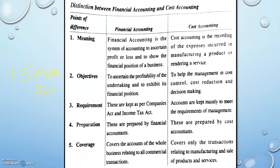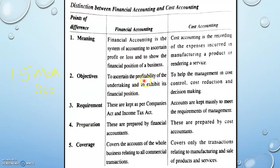If you are doing financial accounting, the objective is assigning profitability and determining financial position through the balance sheet. For cost accounting, the objectives are cost control and cost reduction. Regarding requirements, as per the requirements of the Companies Act and Income Tax Act, companies are maintaining financial accounting books. For cost accounting, books are maintained by management for correct and timely decision making.